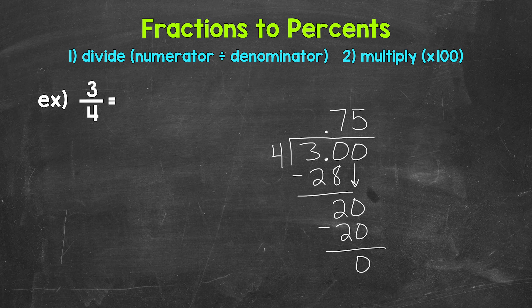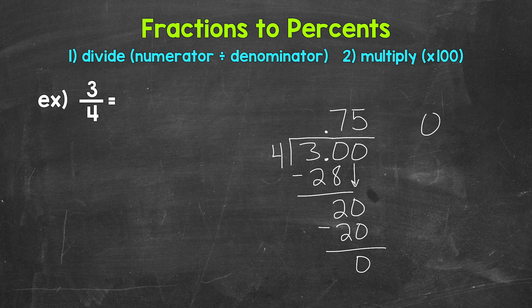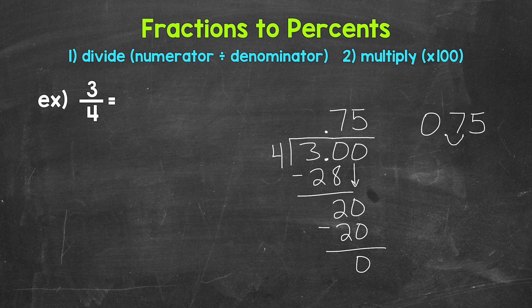Now we need to convert this decimal to a percent by multiplying it by 100. And again, we can do this by moving the decimal twice to the right. So let's rewrite 75 hundredths off to the side here and move the decimal once, twice to the right. So we end up with 75, 75 percent, three fourths equals 75 percent.